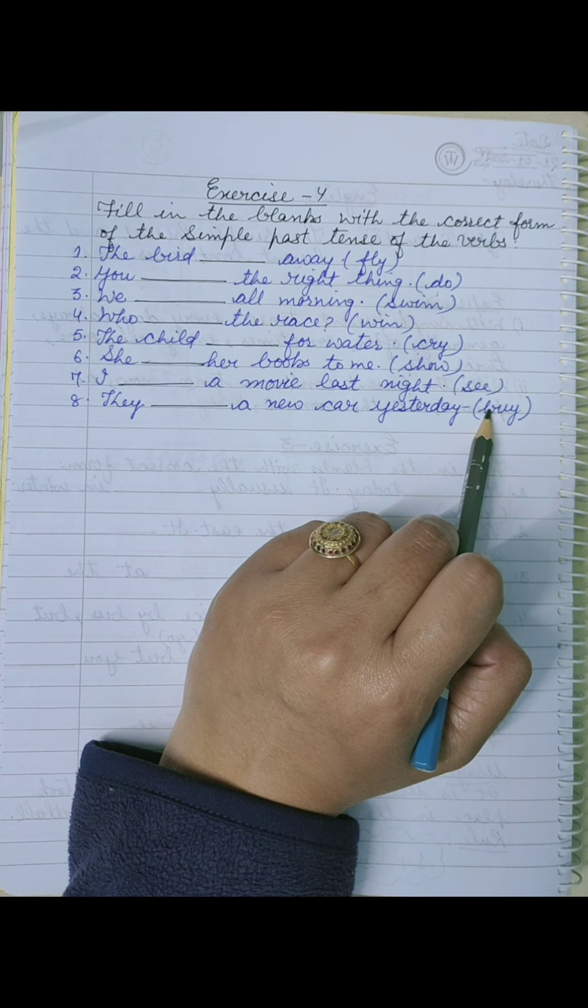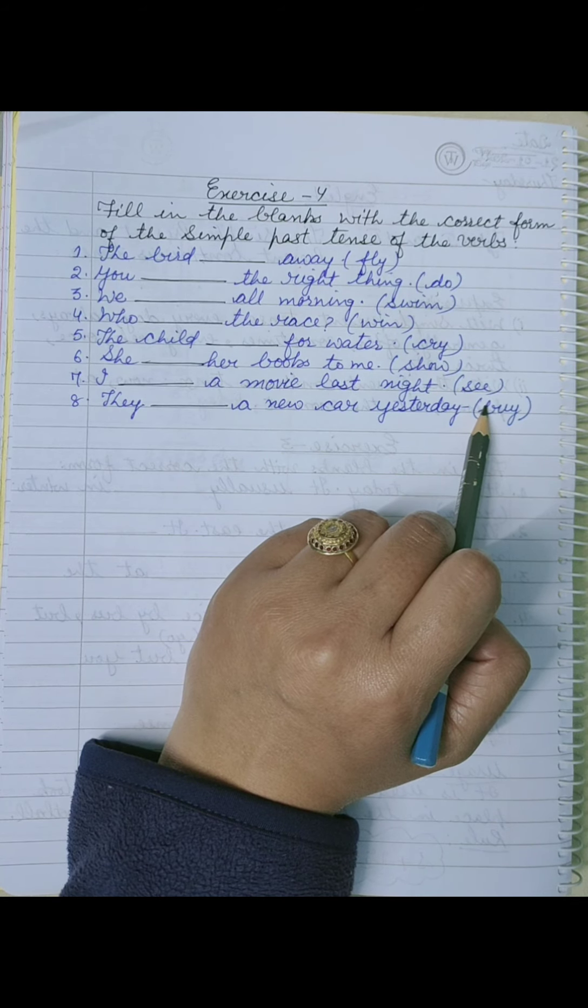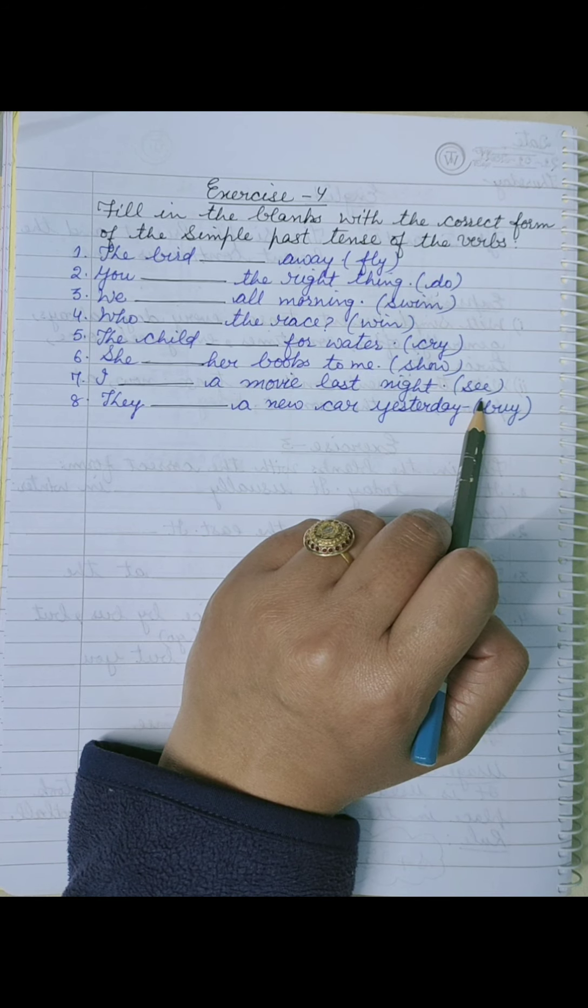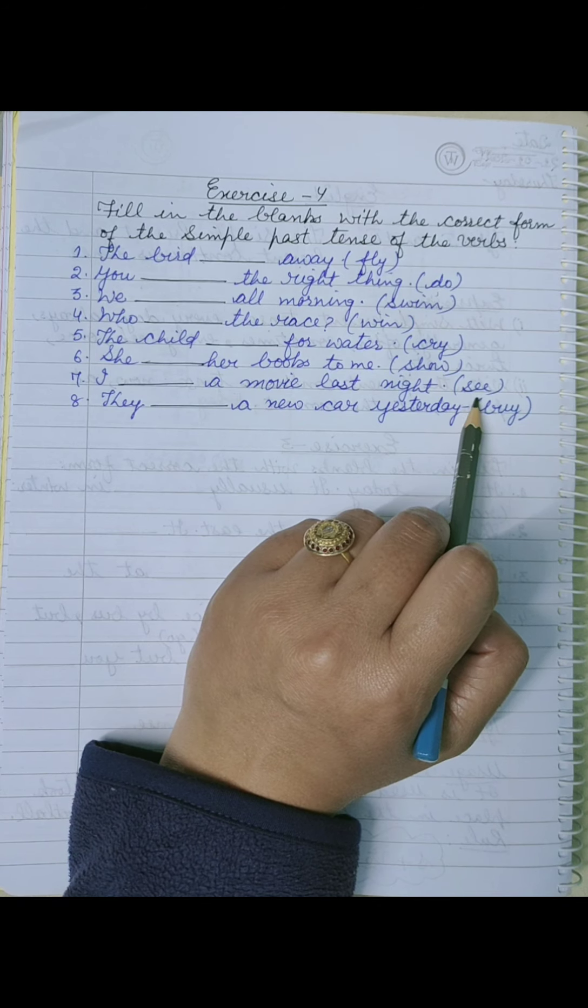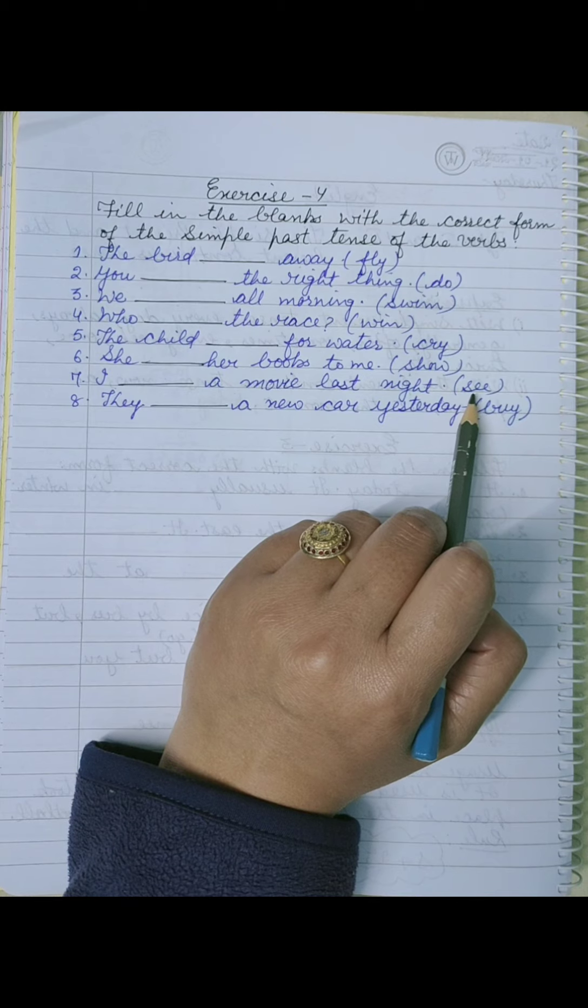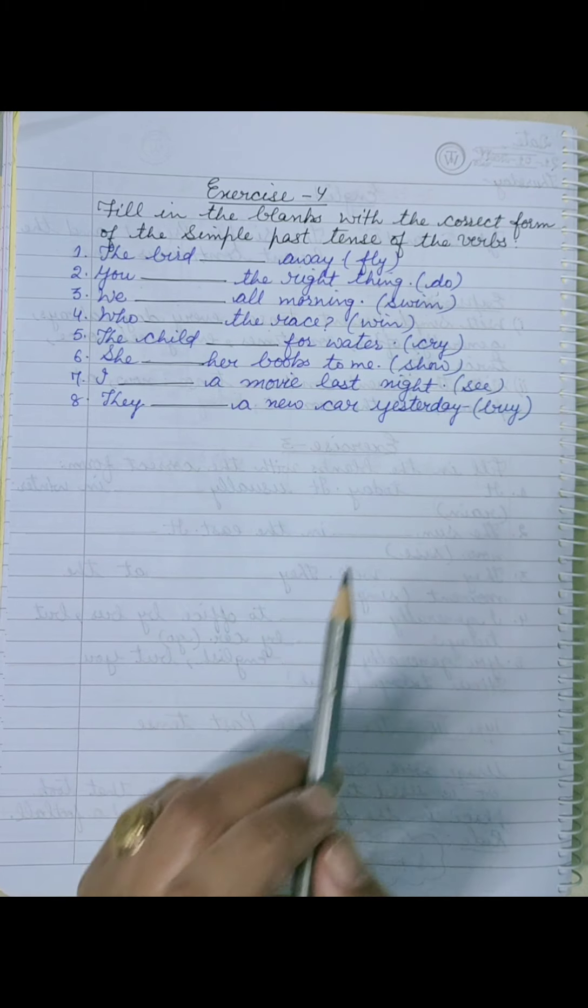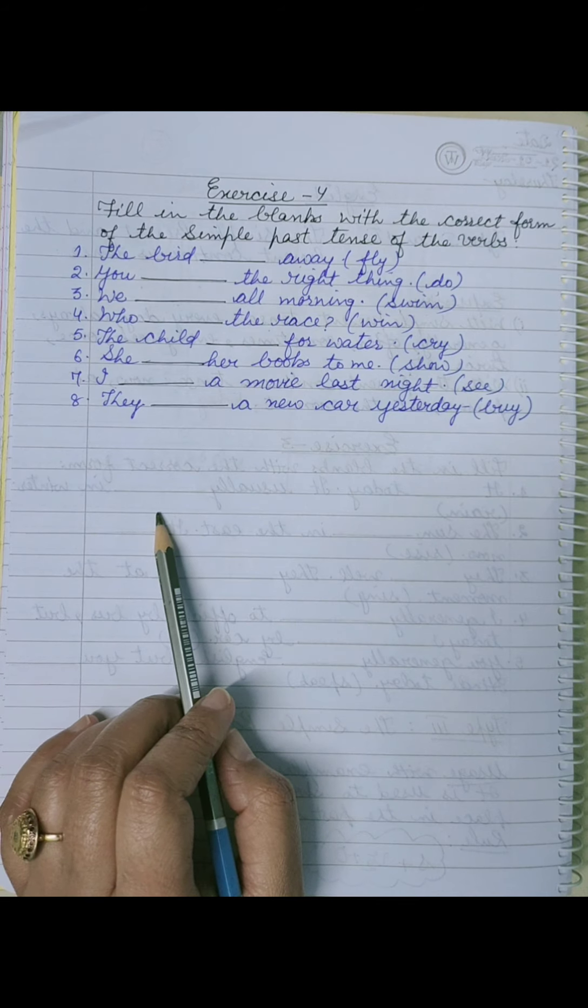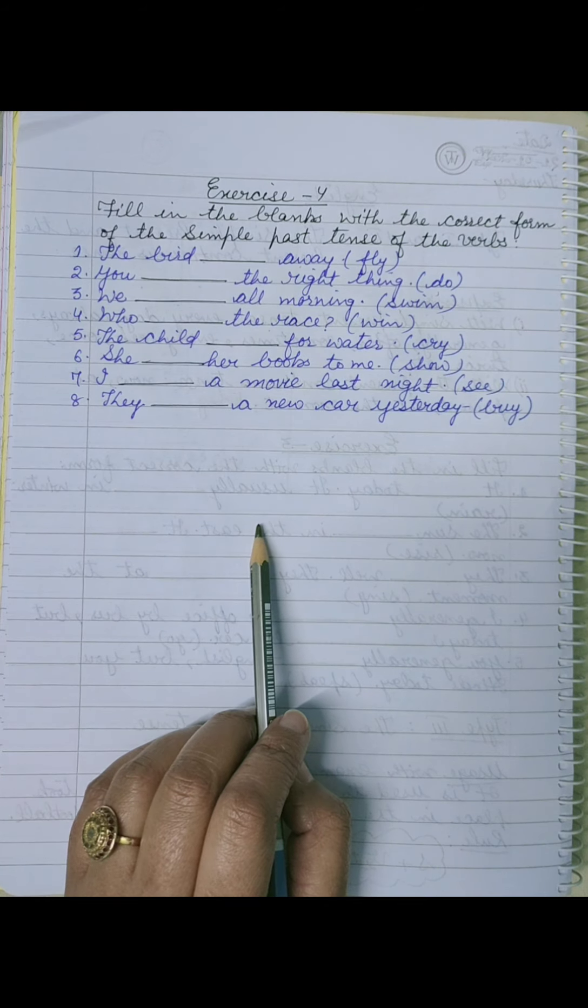So first of all, you should have knowledge of all types, all forms of verb: present work, past, and past participle, and present participle. तुम्हारे पास four types होती है.